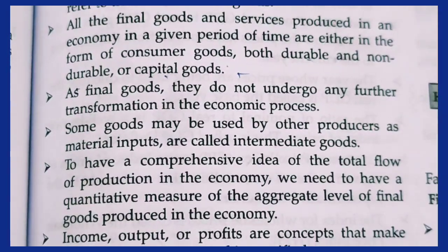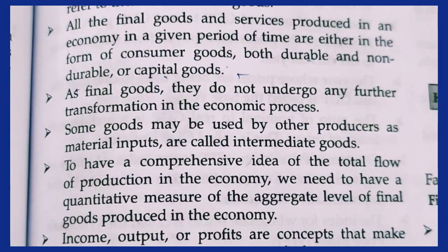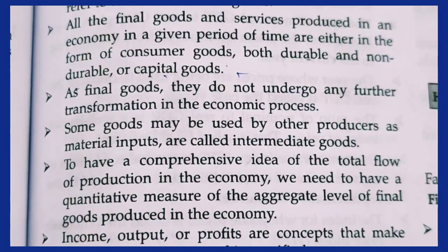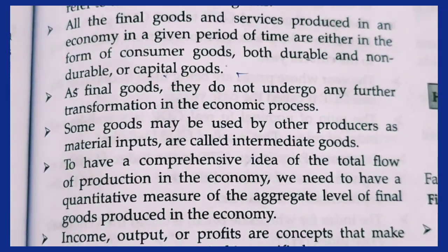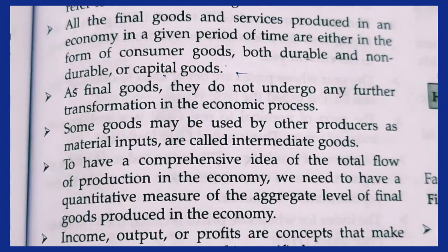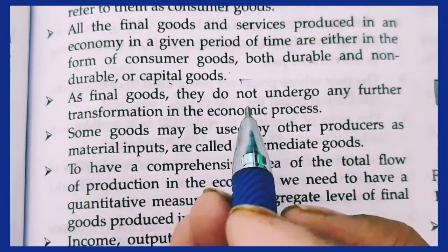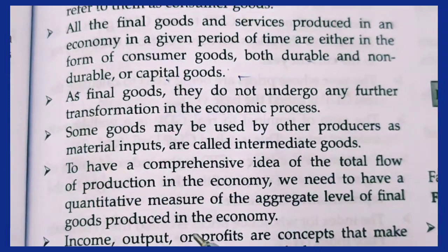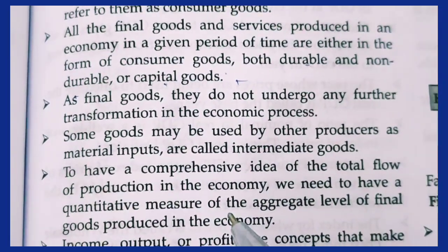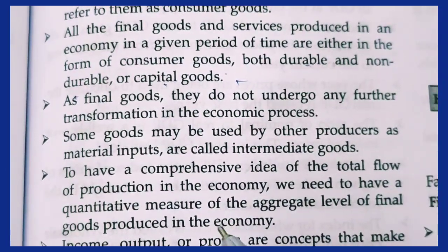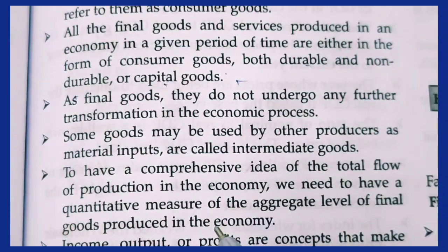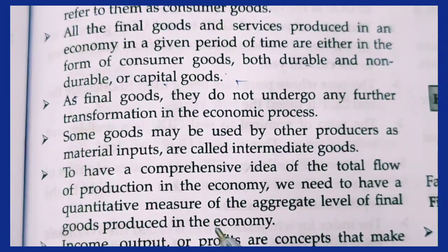The component that will be attached to the final product is intermediate goods. For example, a company like Mercedes assembles components made by various suppliers — those supplied components are intermediate goods used in the production of the final car.